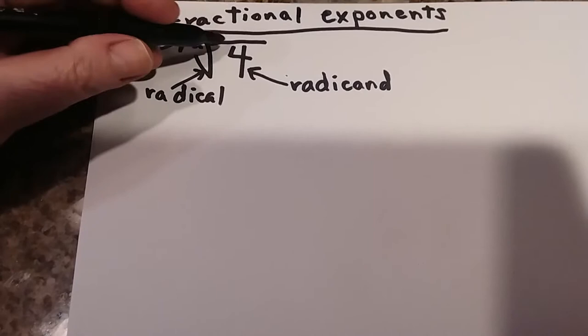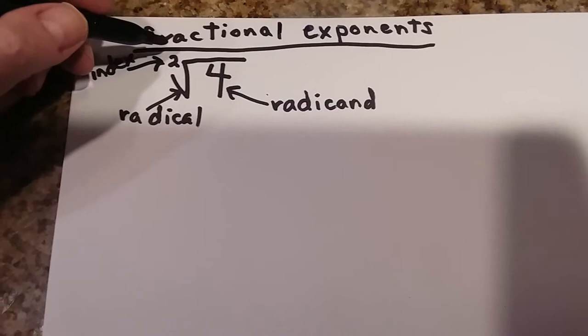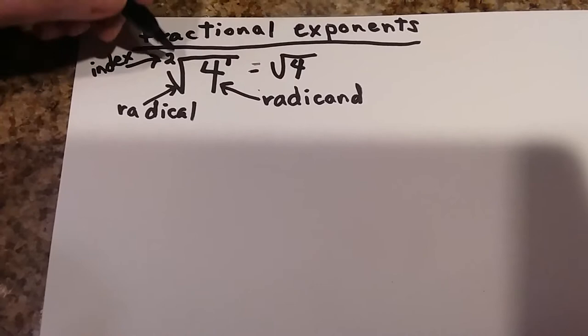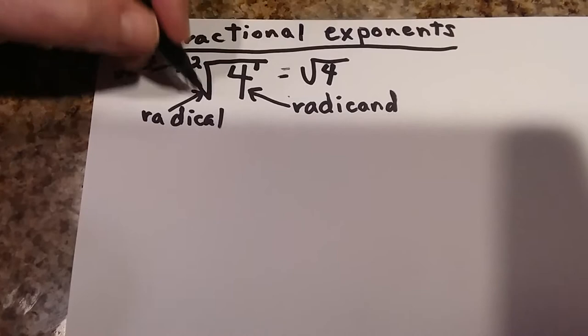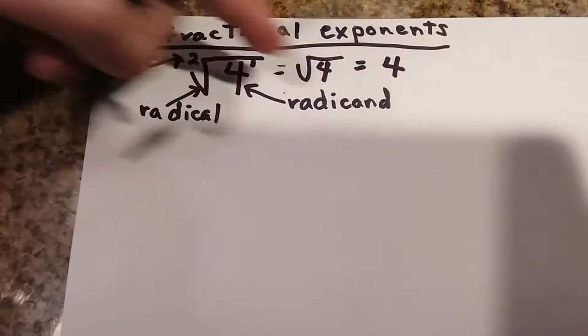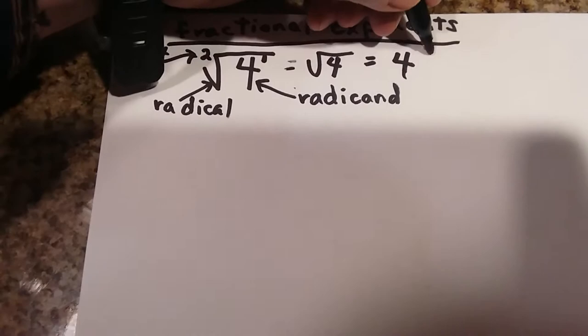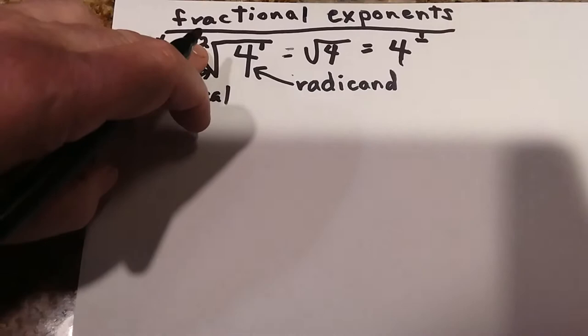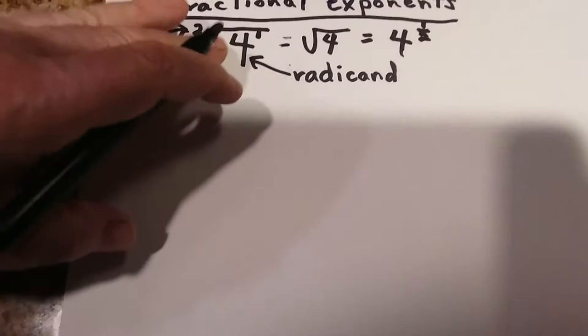Understood means you don't have to write it — if you leave it out, it doesn't matter. So this is the same as just plain square root of 4. I'm also going to put the exponent of 1, which is also understood, but I'm putting those in to explain how this works. You could always write this as a fraction whenever you have a radical. The number inside is called the radicand, and the number outside is called the index. The exponent — which is 1 — always goes on top, and the index goes on the bottom. That's the general way you can get a fraction out of a radical.